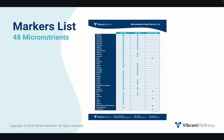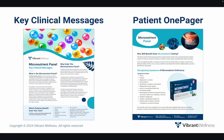The micronutrient panel is a blood test that provides a comprehensive assessment of an individual's extracellular and intracellular levels of 48 vitamins, minerals, cofactors, amino acids, metabolites, antioxidants, and essential fatty acids — nutrients found in food that are essential for human health. The panel identifies functional insufficiency, deficiency, overload, or toxicity of micronutrient levels and helps identify impaired micronutrient absorption, cellular transport, or uptake, which can increase the risk of chronic disease.